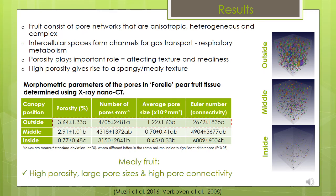A high porosity gives rise to a spongy or mealy texture. Outside canopy fruit had a significantly higher porosity, number of pores, larger pore sizes, and higher pore connectivity in comparison to inside canopy fruit. These results are in agreement with previous work that reported mealy fruit to be associated with higher porosity, larger pores, and higher pore connectivity compared to non-mealy fruit.